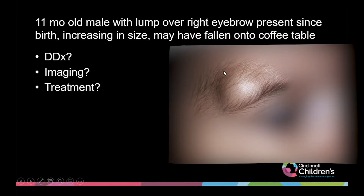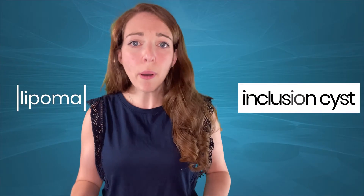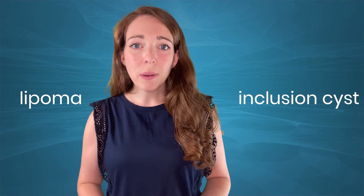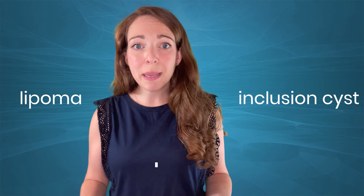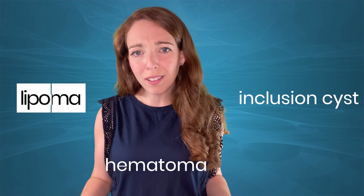Let's get started with a case. This is a little 11-month-old male who comes in with a lump over the right eyebrow. It's been present since birth and has been increasing in size. The parents say he might have fallen and hit the coffee table. So it could be a lipoma or an inclusion cyst, or with that history, maybe even a hematoma from this suspected fall.